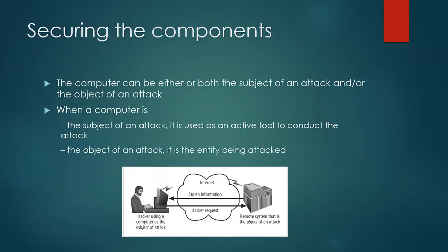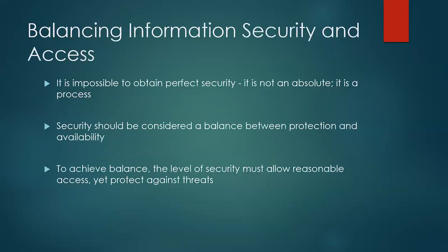A computer can be either the subject or the object of an attack. When a computer is the subject of an attack, it is used as an active tool to conduct the attack. When it is the object of an attack, it is the entity being attacked. Balancing information security and access: perfect security is not absolute — security should be considered a balance between protection and availability.